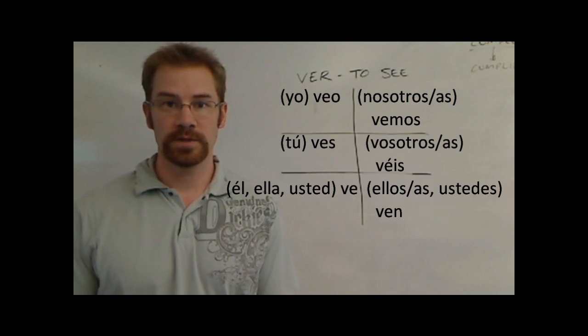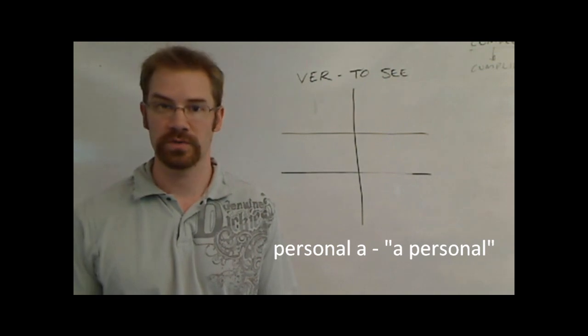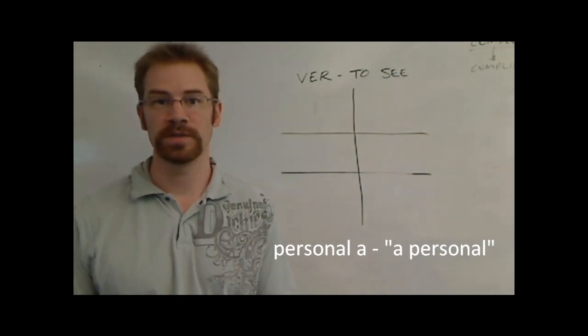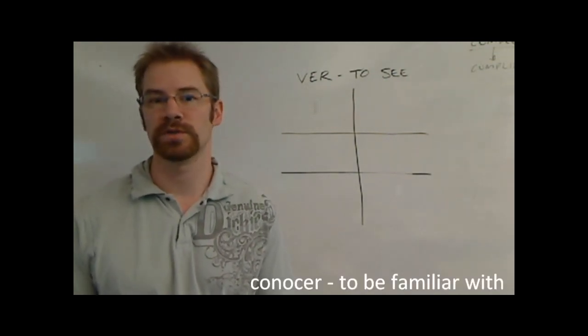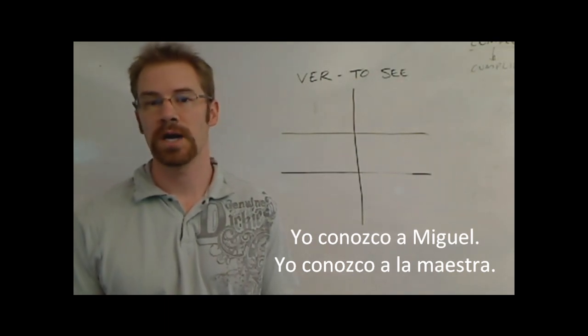There's one thing you want to consider when you're using the verb ver. It also follows the rules of the personal e, the a personal. If you remember the verb conocer means to be familiar with. When you were familiar with a person, you would say yo conozco a Miguel. Yo conozco a la maestra.